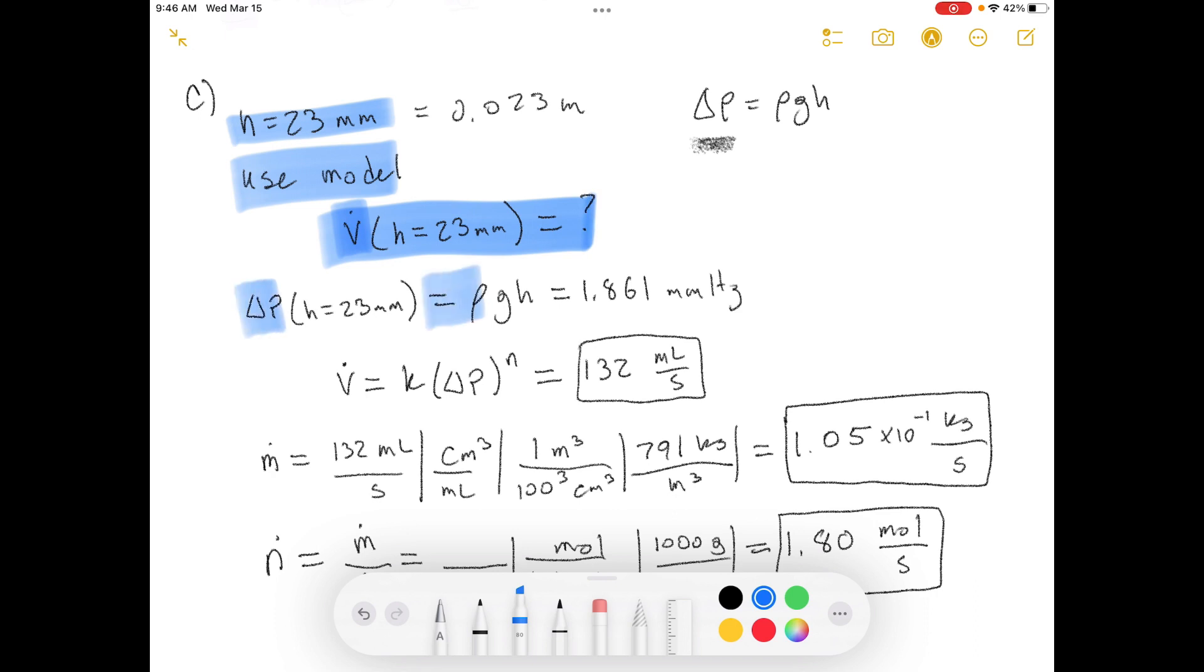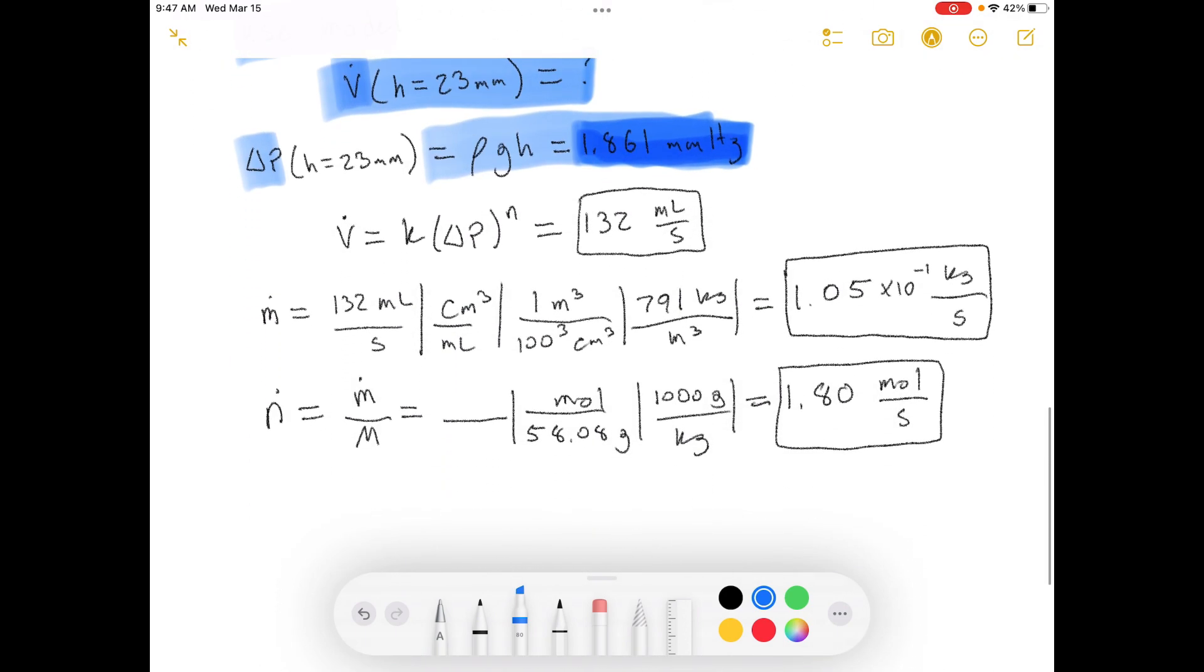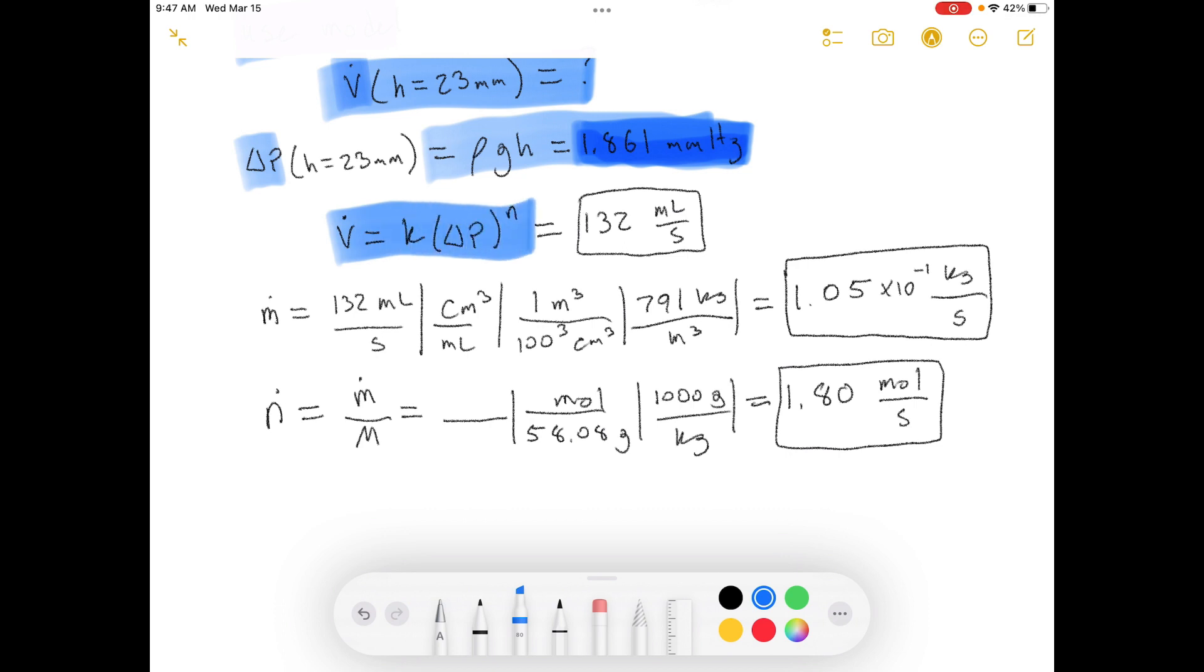Well, we need to know what delta P is. So we calculate what the delta P is in millimeters of mercury. Make sure it's millimeters of mercury because remember, our model was defined using millimeters of mercury. So K has certain units assuming that you're using millimeters of mercury. And it spits out milliliters per second in its volumetric flow rate. So remember, the units are important to keep track of here. So we use our model. We defined K and N. And so then we calculate that the volumetric flow rate is 132 milliliters per second. So then we just need to convert these into a mass flow rate and a molar flow rate using the relationships that we got out of the back of the book.